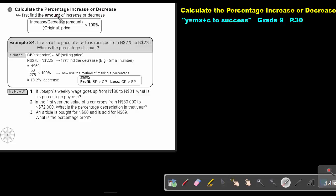First find the amount of increase or decrease. Then take that amount and put it over the original price or amount and then multiply it by 100%. So let's just look.